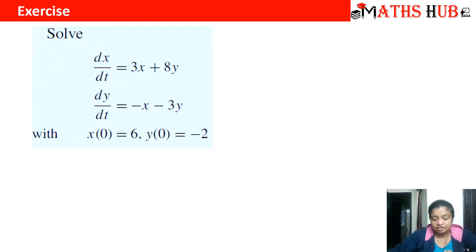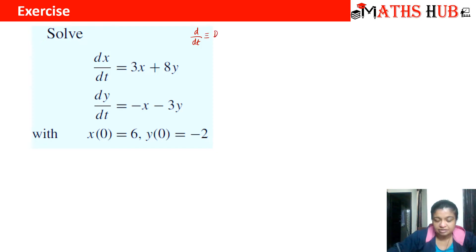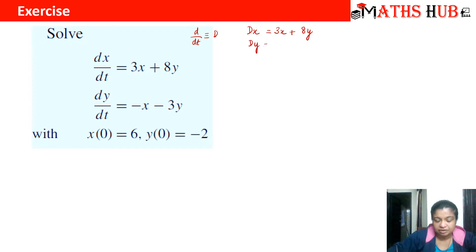We are given the differential equation dx/dt = 3x + 8y, and dy/dt = −x − 3y. The derivative operator here is d/dt, so we replace it with the operator D. Converting to symbolic form, the first equation becomes Dx = 3x + 8y and the second becomes Dy = −x − 3y. Now let us take all terms to one side.